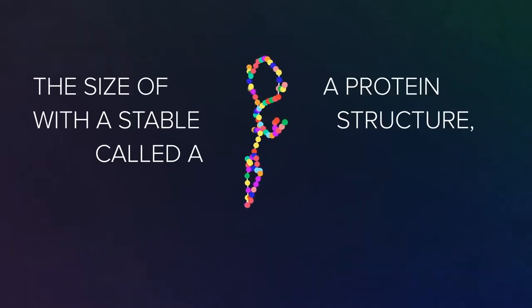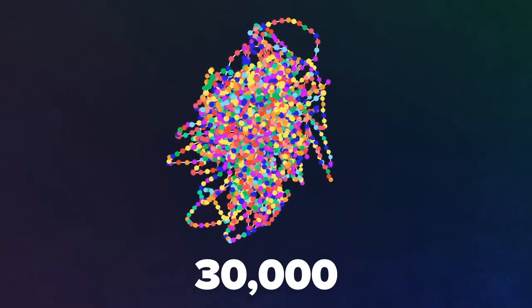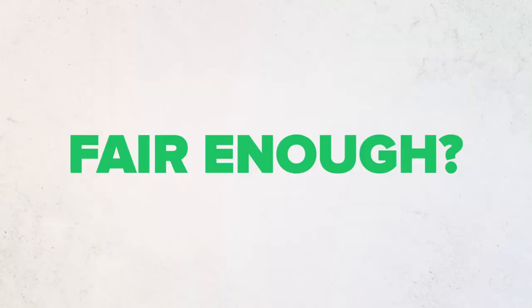The size of a protein with a stable structure called a fold ranges between about 75 and 30,000 amino acids. Let's just take a small number like 150. Fair enough? Great.